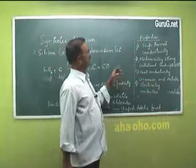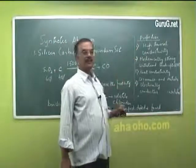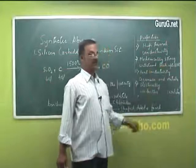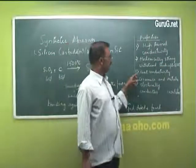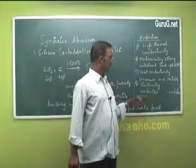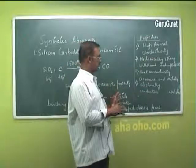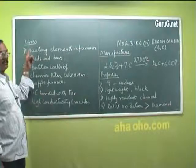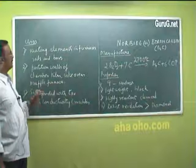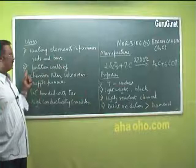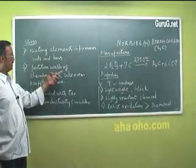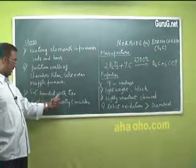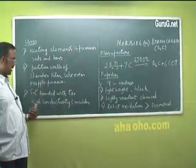The properties of silicon carbide include high thermal conductivity, high mechanical strength, and the ability to withstand temperatures up to 1650°C. Its heat conductivity is between that of ceramics and metals, and electrically it behaves between a conductor and an insulator. Silicon carbide is used as heating elements in furnaces as rods and bars, as partition walls in chamber kilns, coke ovens, and muffle furnaces, and silicon carbide bonded with tar is used for high-conductivity crucibles.